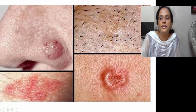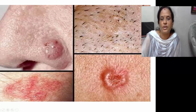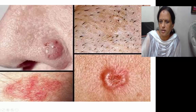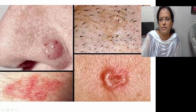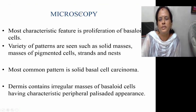This is a lesion on the hair-bearing skin — a nodule on the heel of the nose. It looks like a slightly elevated spreading lesion. This one is nodulo-ulcerated.